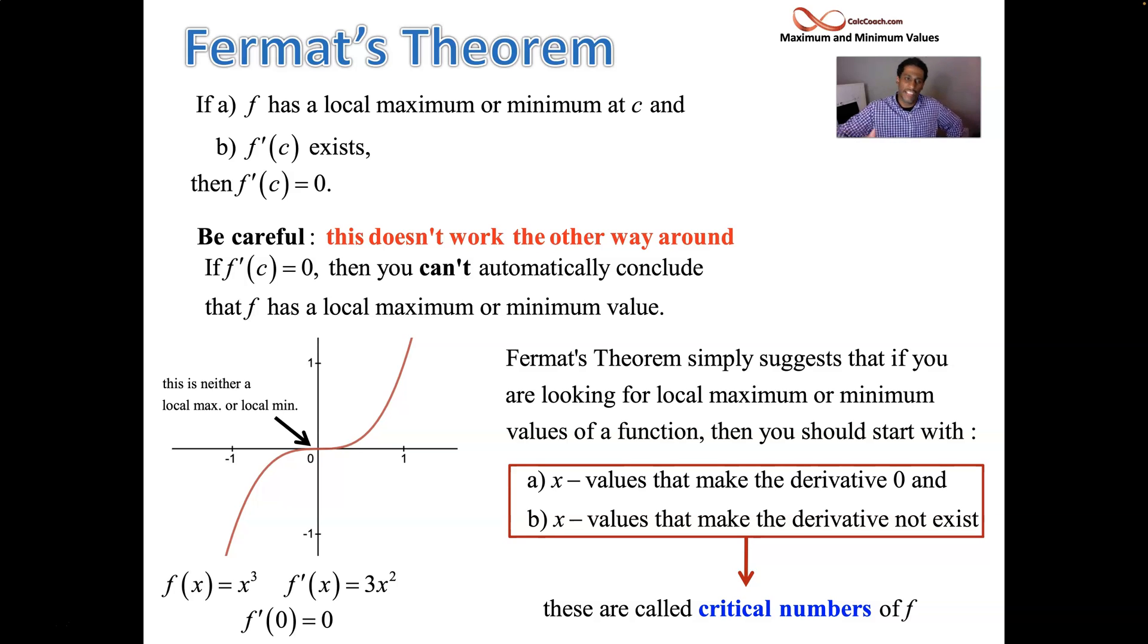So that lays the groundwork. Extreme value theorem together with Fermat's theorem. Extreme value theorem is geared towards the absolute maximum, absolute minimum. Fermat's theorem is geared towards the local maximum, local minimum. And so in our next example, we'll just look at finding critical points. And then we'll look at what do you need to do to find the absolute maximum or the absolute minimum value. According to extreme value theorem, as long as your interval is closed, that's enough.